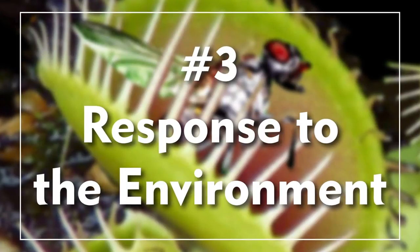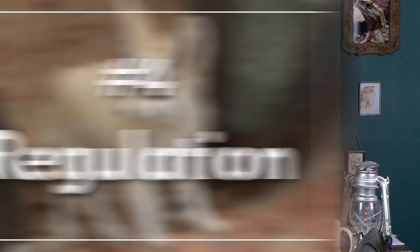How incredible is change when you really think about it? Number three: response to the environment. It's one thing to exist, and another thing to exist in response to your surroundings. The fact that a living thing makes changes to itself in response to something else is unique to life. Number four: regulation. Goldilocks got it right — there really is that sweet spot that's just right. Living things have the remarkable ability of making changes to themselves to reach or stay in that perfect window of conditions, or homeostasis.